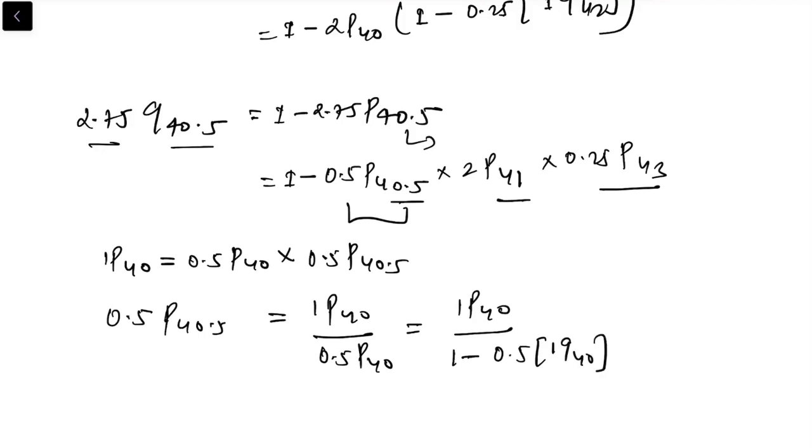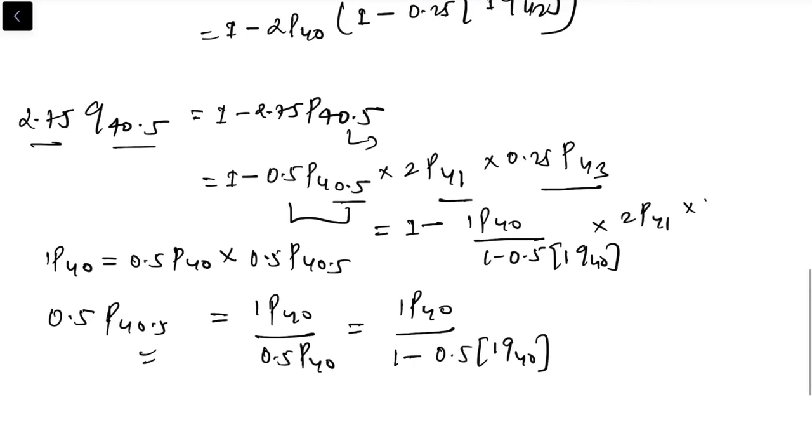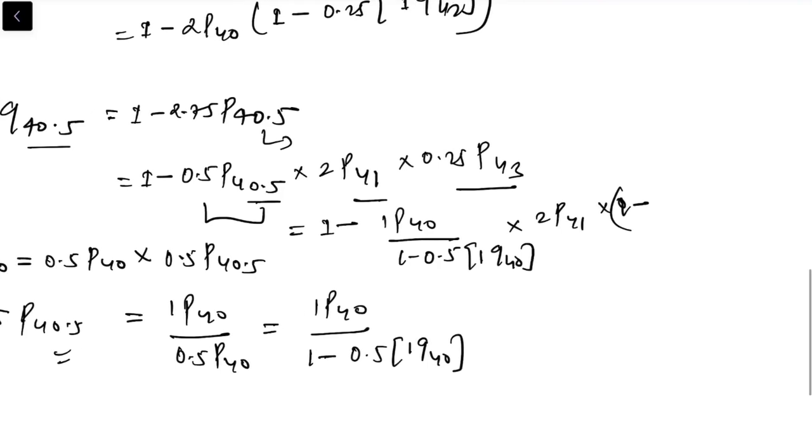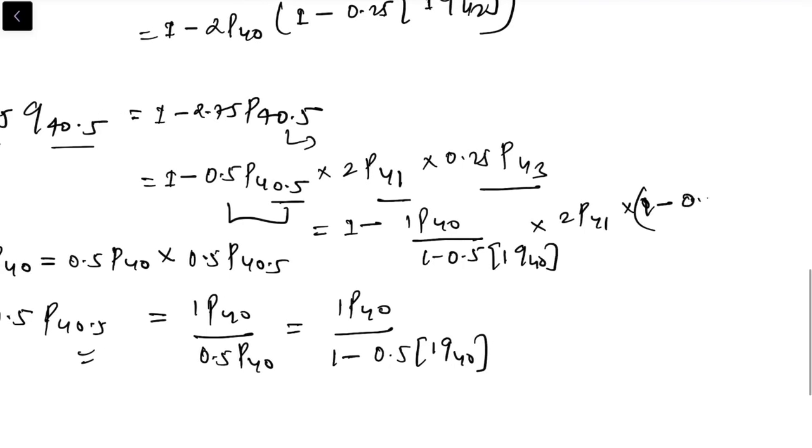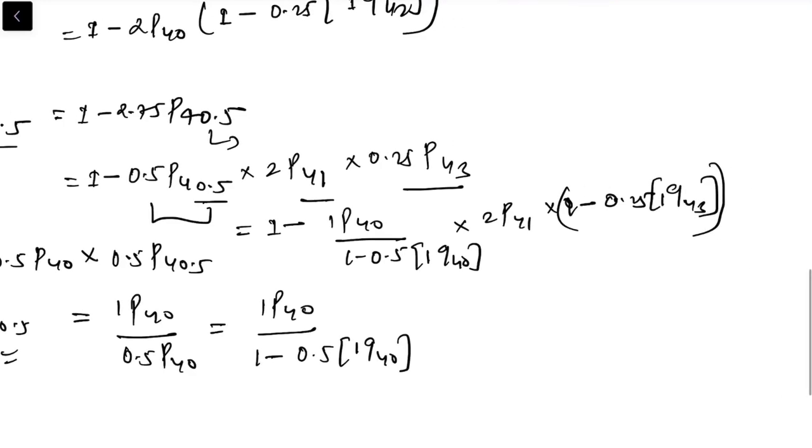Now you can put the value of this into this equation. So this is 1 minus 1 p40 divided by (1 minus 0.5 times 1 q40) times 2 p41 times (1 minus 0.5 q43). Then you can solve this looking at the values from the table.